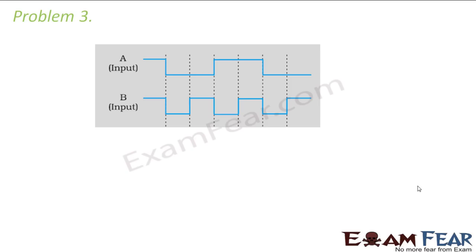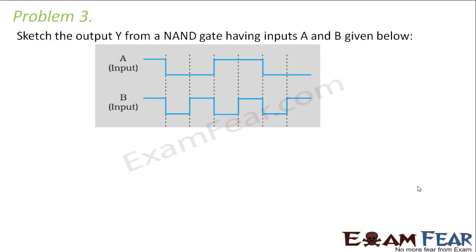Let us look at the last problem of this lesson. It asks us to sketch the output Y from a NAND gate having inputs A and B given below. So what is your NAND gate? In a NAND gate the output is given by AB bar. So let us quickly plot the truth table of a NAND gate.